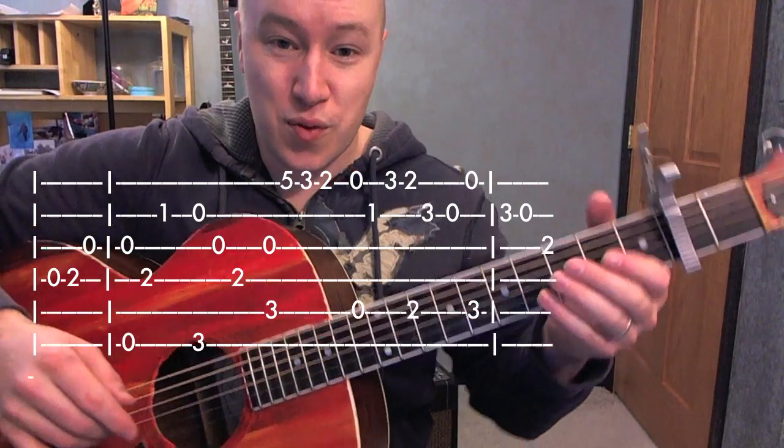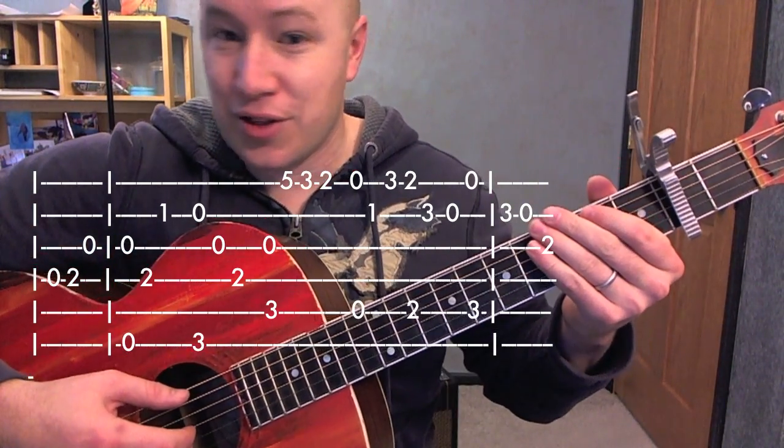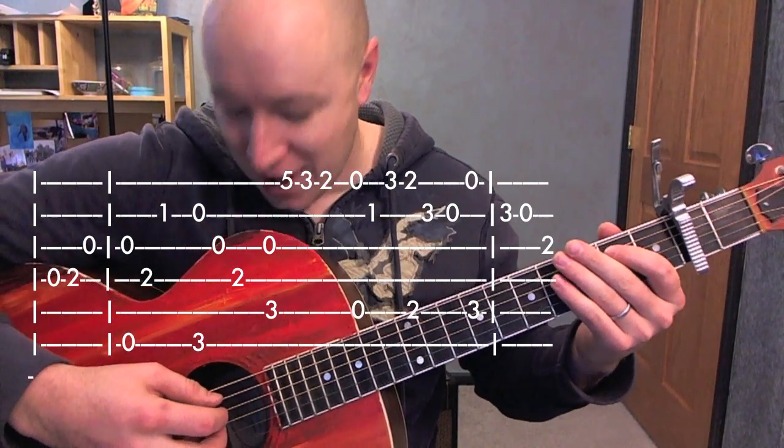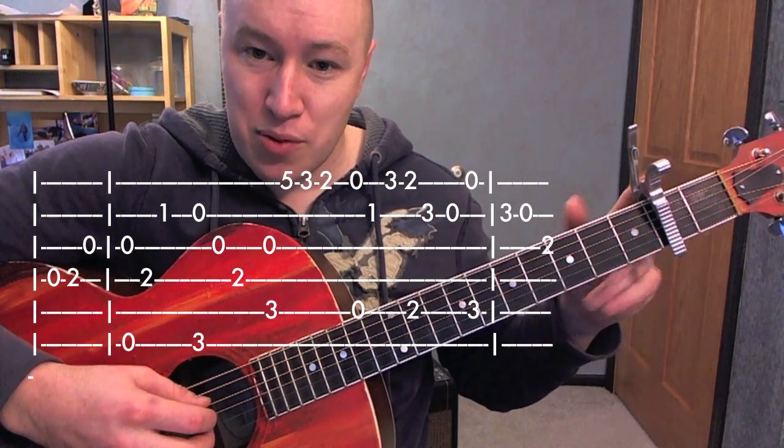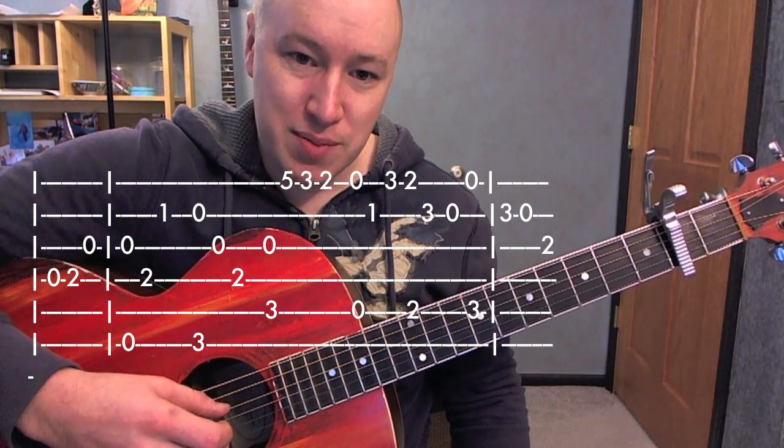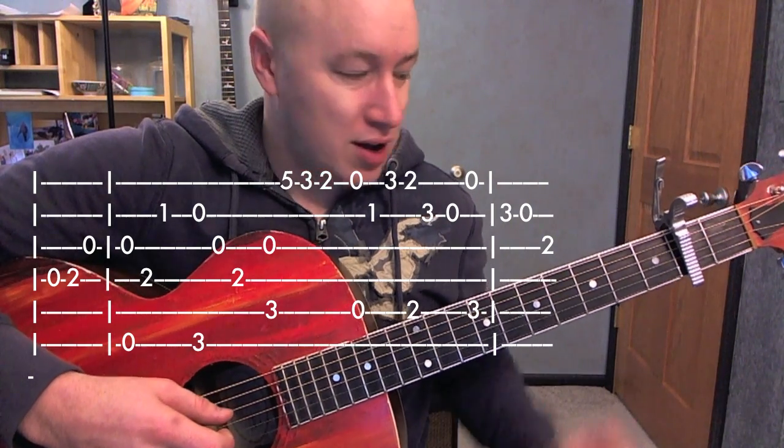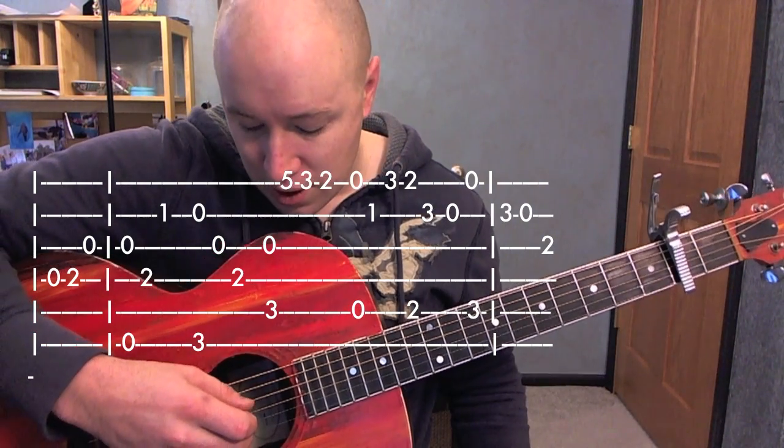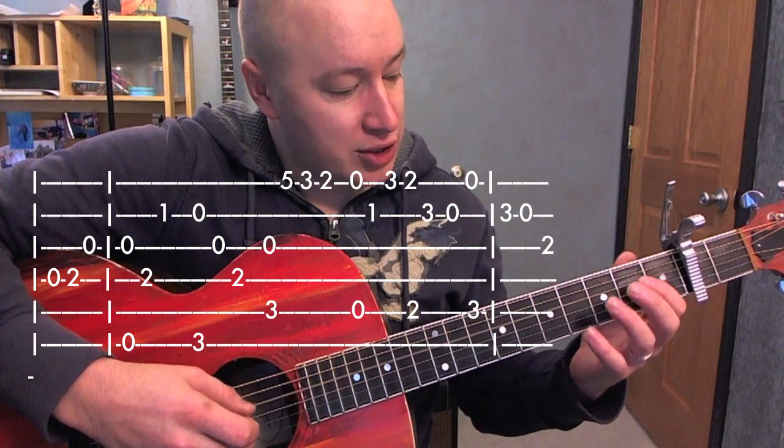Let's start with the riff. The tabs are up there, they should help. Start from the 4th string, and I'm capoing on the 2nd fret. So when there's the 0 there, it means I'm just playing the open string on the 4th fret with the capo on.